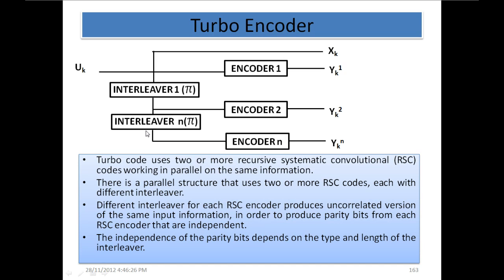Different interleavers for each RSC encoder produce uncorrelated versions of the same input information in order to produce parity bits from each RSC encoder that are independent. This interleaver is actually the main strength of the turbo encoder. The independence of parity bits depends on the type and length of the interleaver. The required property of the turbo encoder is that the outputs of these encoders must be independent of each other, or uncorrelated.